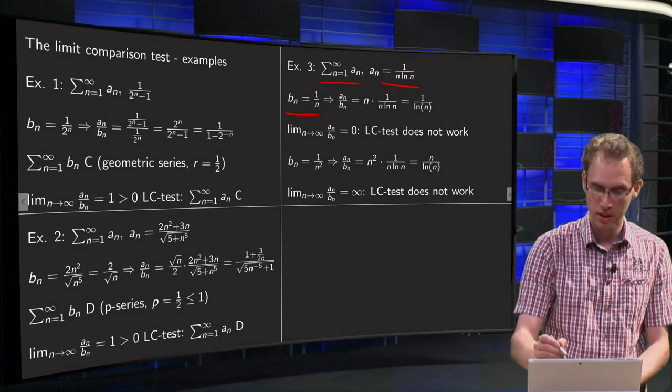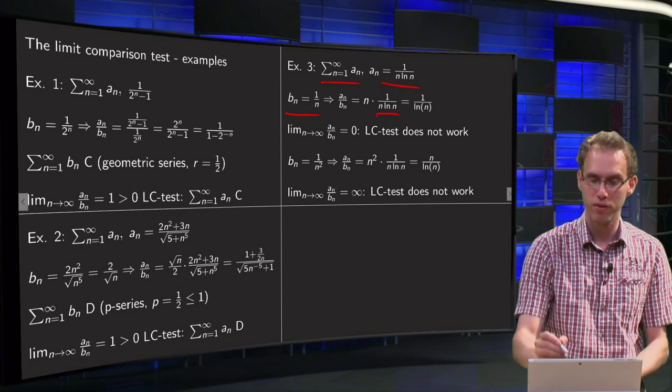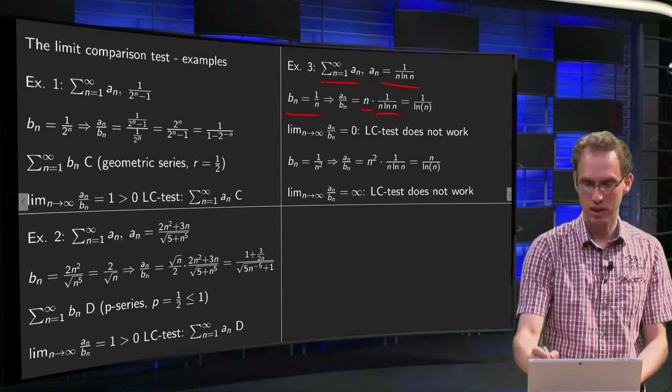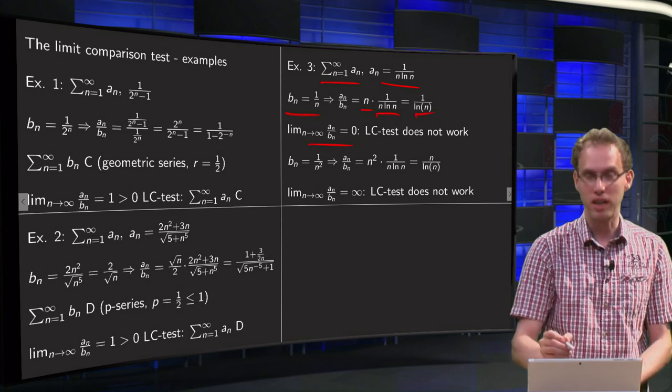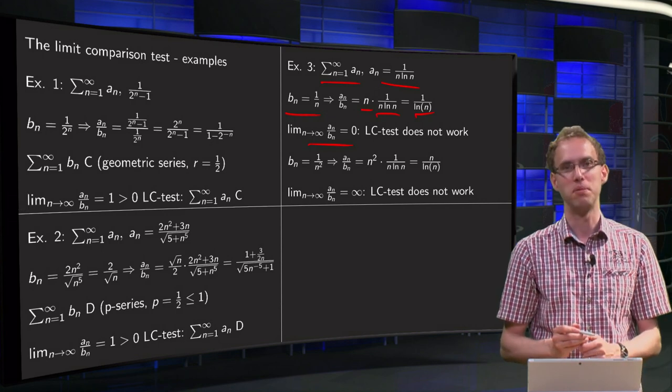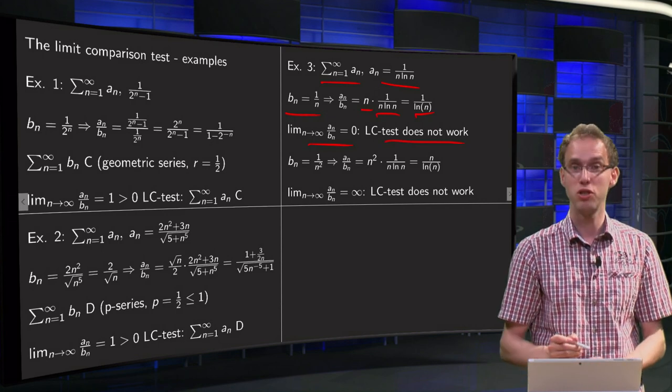Then an over bn becomes the an over here divided by 1 over n, so multiply by n, so we get 1 over ln of n. If we now take the limit n to infinity, we get 0. Ah, that's a pity, the limit comparison test does not work.